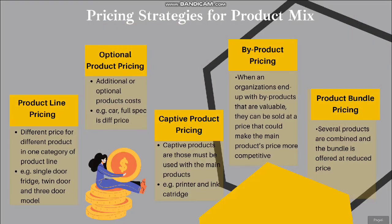Next are pricing strategies for the product mix. The first is product line pricing — setting different prices for different products within one category or product line. For example, a single-door, twin-door, and three-door refrigerator model. The second is optional product pricing, which means pricing additional or optional product features. For example, a manual spec car is priced differently from an auto spec car.